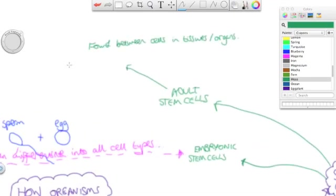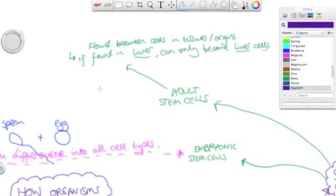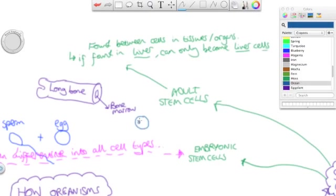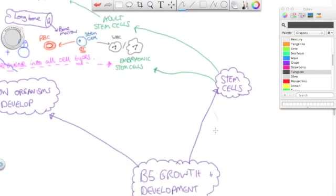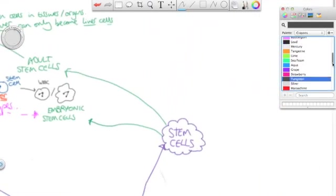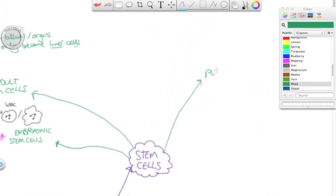Now adult stem cells are found in newly born children and adults as well, not just adults. And they can only really form into a few types of cells. So for example, in your long bones, in your femur, for example, in your leg, there are adult stem cells that can change into either red blood cells or white blood cells. They couldn't become neurons. They couldn't become skin cells. They can only really form into a few types of cells. So it's better to use embryonic stem cells for research than adult stem cells.